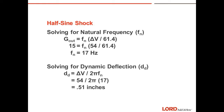We can now use that to determine our natural frequency. G's out equals natural frequency times the change in velocity divided by 61.4. Plugging in: 15 equals Fn times 54, divided by 61.4. Solving for Fn, the natural frequency is 17 Hz. Now we calculate the dynamic deflection at the isolator: dynamic deflection equals delta V divided by 2 times pi times Fn. Solving: 54 divided by (2 times pi times 17) gives a dynamic deflection at the isolator of 0.51 inches.